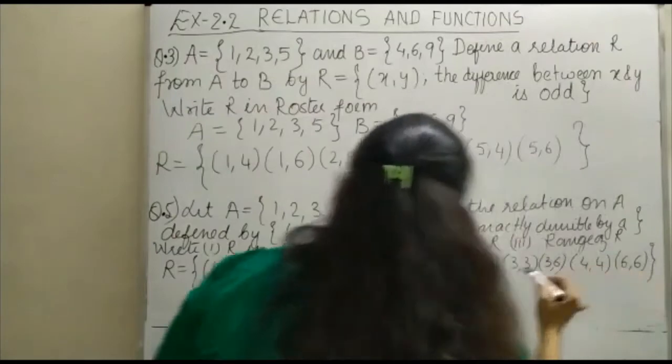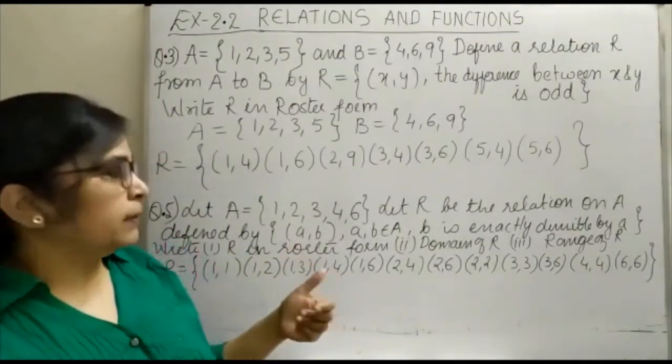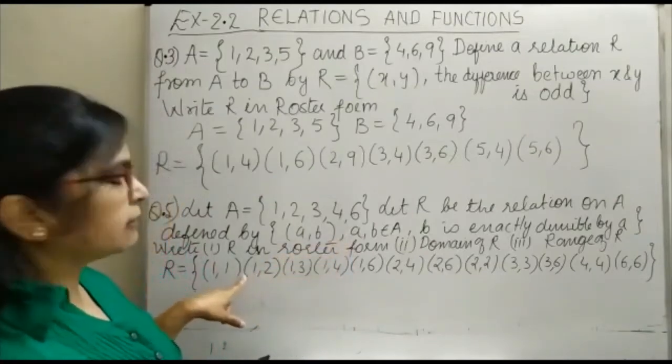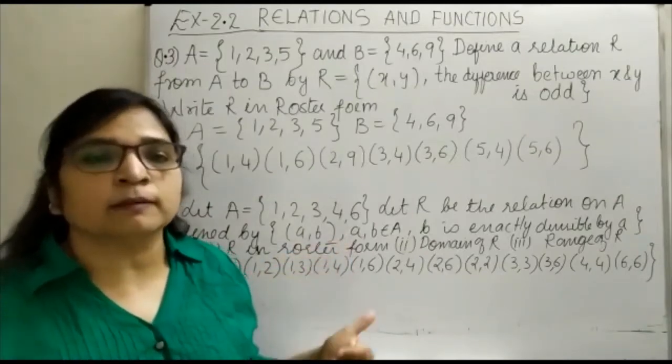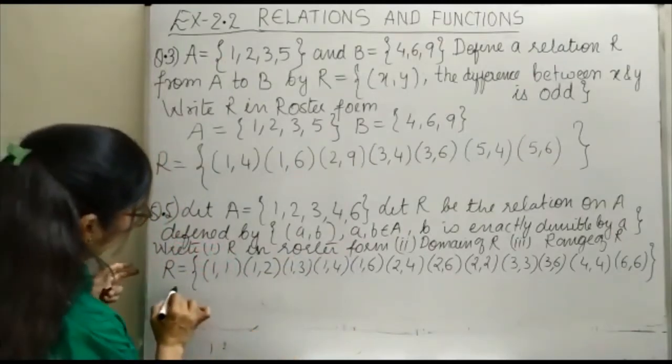So this is your form of all the ordered pairs where the second element is divisible by the first. Now you have to write the domain.